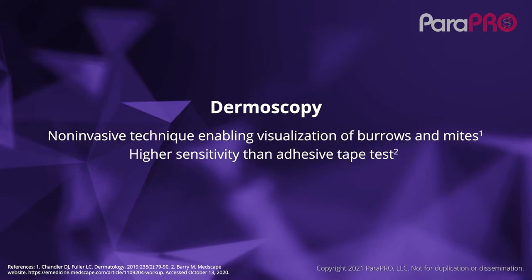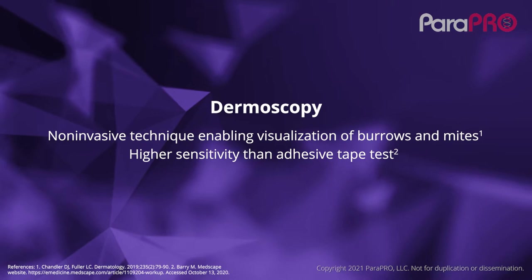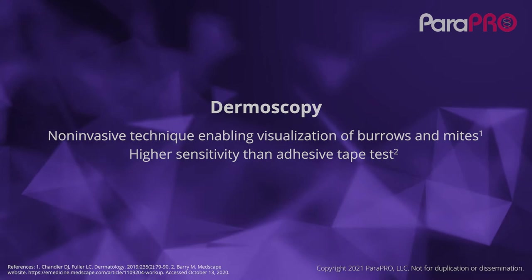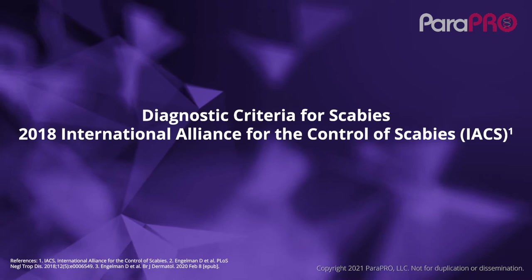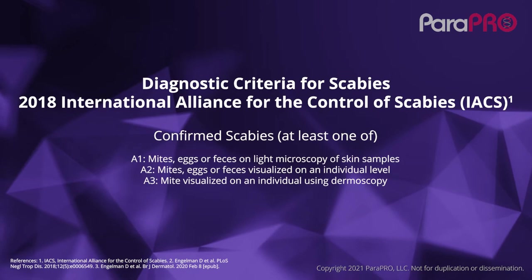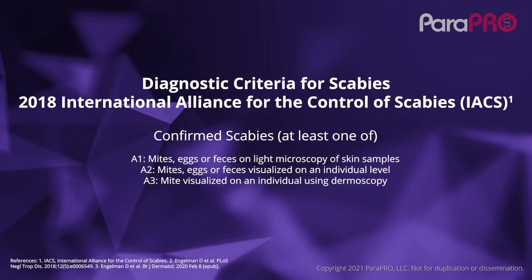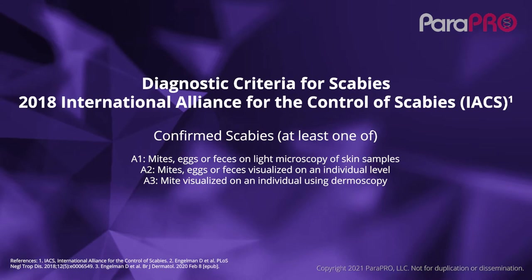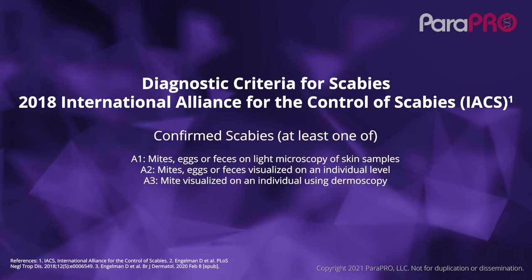Another diagnostic technique is dermoscopy — a highly sensitive and specific technique that can be used to evaluate potential skin lesions of scabies infestation. However, it is user-dependent and requires the presence of a dermatoscope. In 2018, the International Alliance for the Control of Scabies created criteria for the diagnosis of scabies: a confirmed diagnosis, a clinical diagnosis, and a suspected diagnosis. The confirmed diagnosis requires the observation of either mites, eggs, or feces using a light microscope, a dermatoscope, or more sophisticated office equipment.